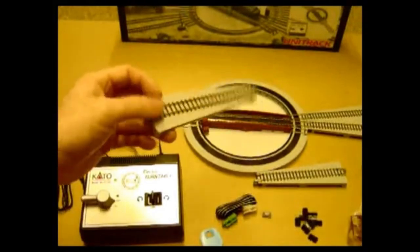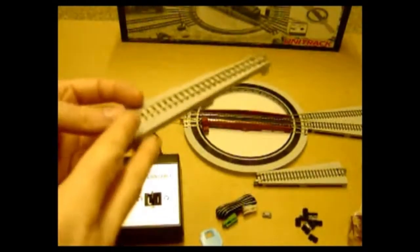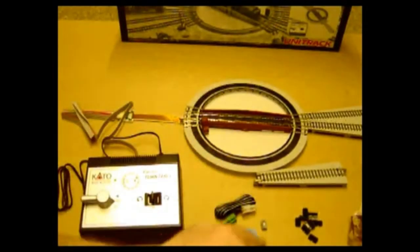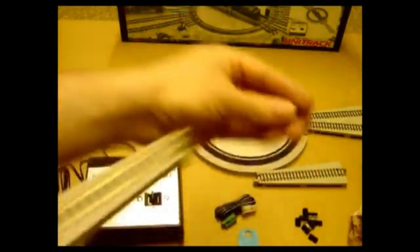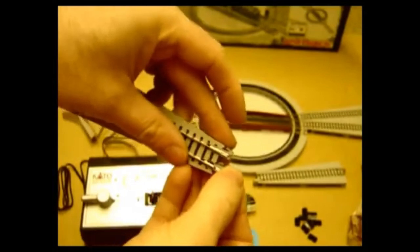In the package you have four of the straight run-on sections, and these are slightly elevated to bring you on the turntable. And you also have the unijoiners and the unijoiner tool. The grey unijoiners are electrically conductive, and the black ones are insulated.